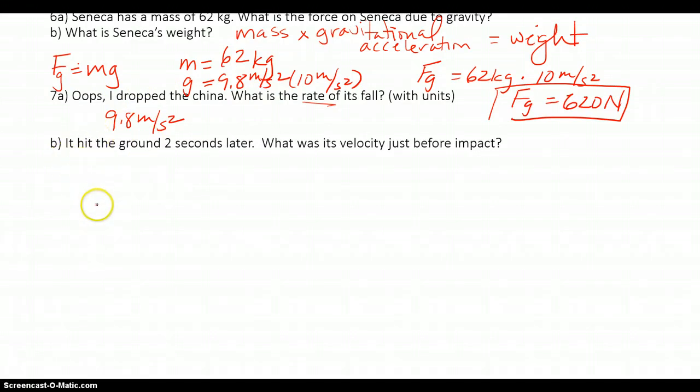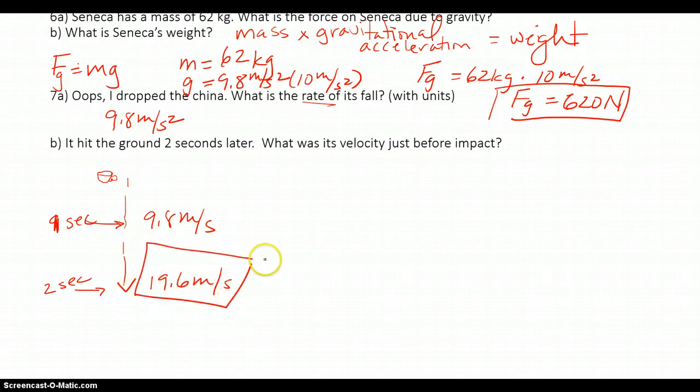For the next one it hit the ground in two seconds. What is the velocity? So this is that equation where we have here my China. We'll do a nice little teacup. And it is dropping, dropping, dropping. At two seconds I want to know how fast it's falling. Well I know that at one second I know that it is, so at one second it's traveling 9.8 meters per second. In the additional second it speeds up another 9.8 meters per second to be 19.6 meters per second. So here is my velocity after two seconds.